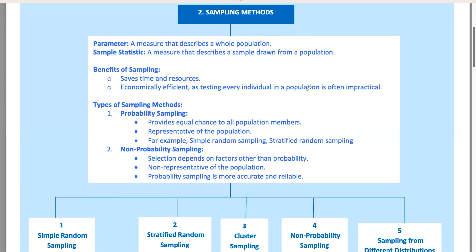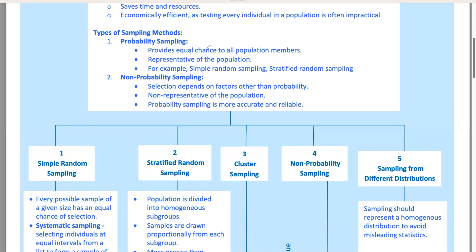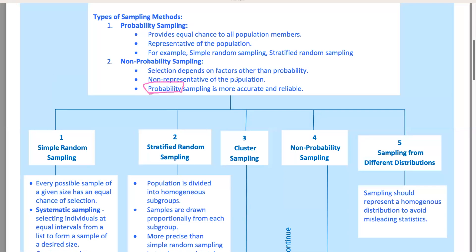Now, onto the nitty-gritty of sampling methods. There are two main types, probability sampling and non-probability sampling. Probability sampling gives every member of the population an equal chance of being selected. It's like drawing names out of a hat, fair and square. Non-probability sampling, not so much. Here, the chance of being selected depends on other factors, like the researcher's judgment or how easy it is to get the data. Probability sampling is more accurate and reliable. Under this, we have methods like simple random sampling and stratified random sampling.